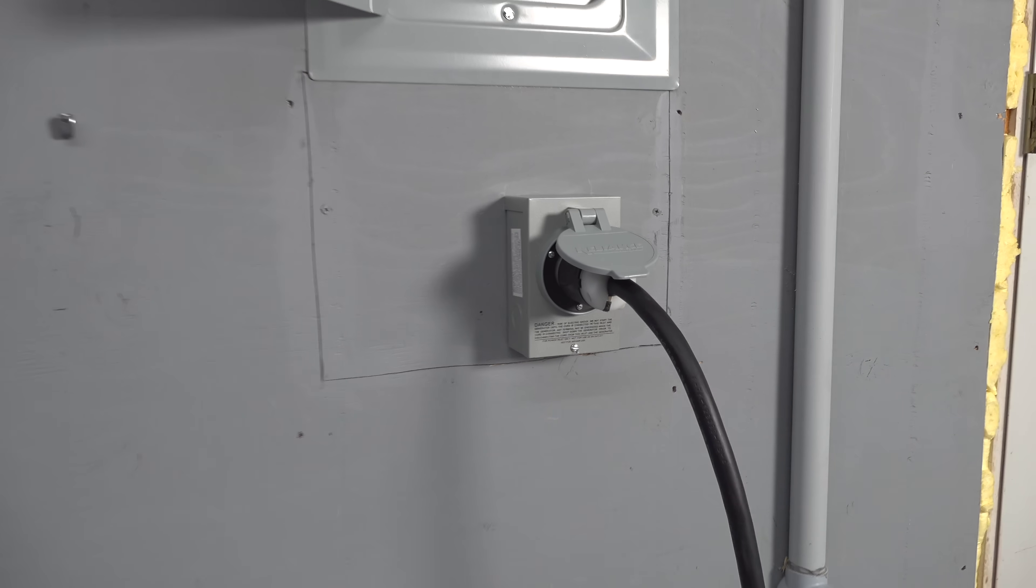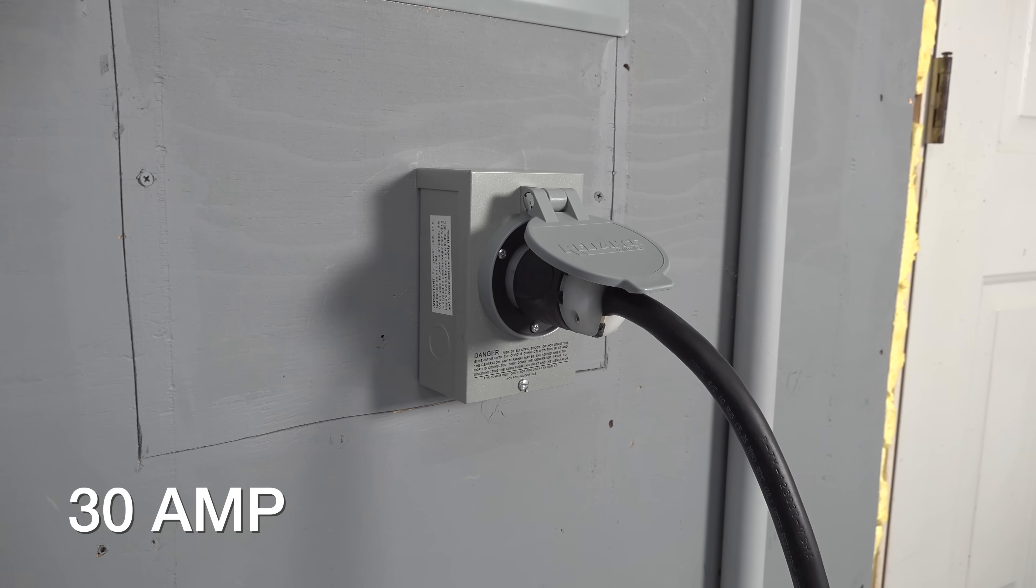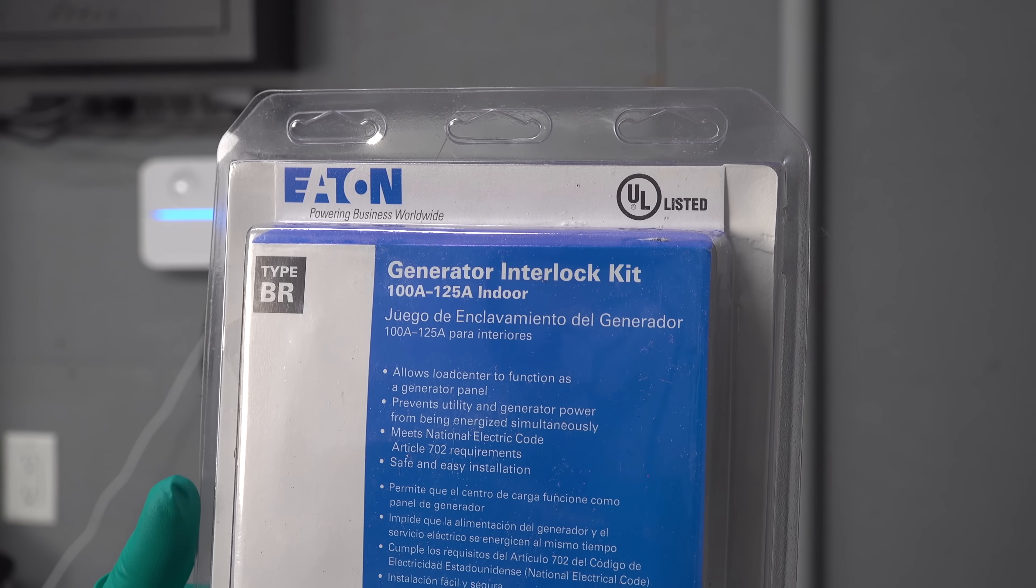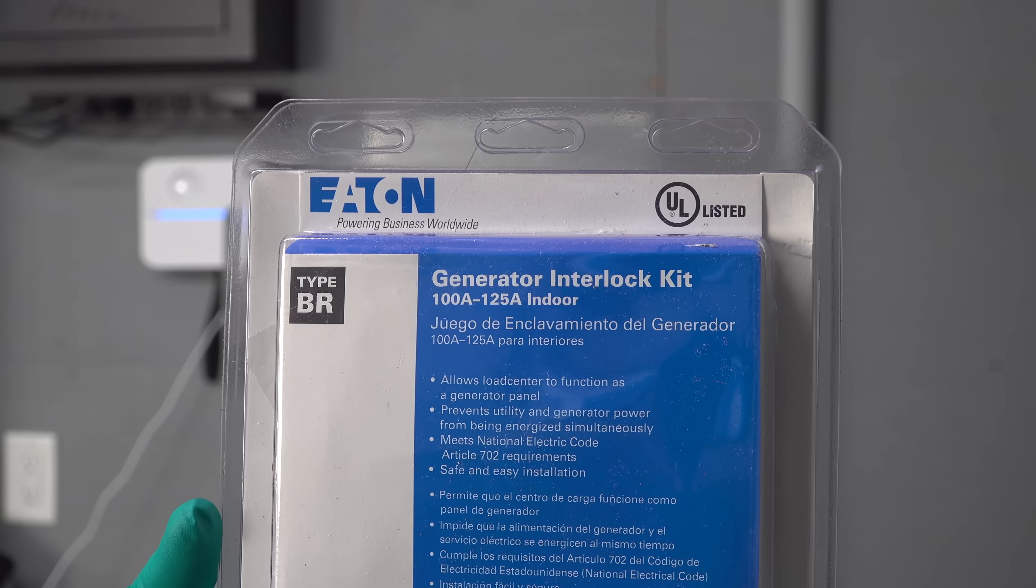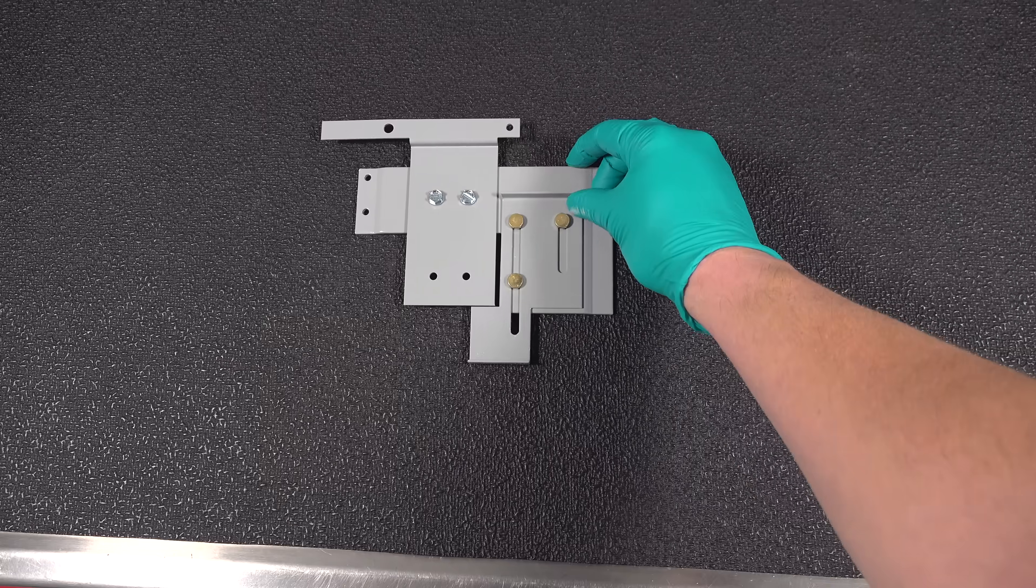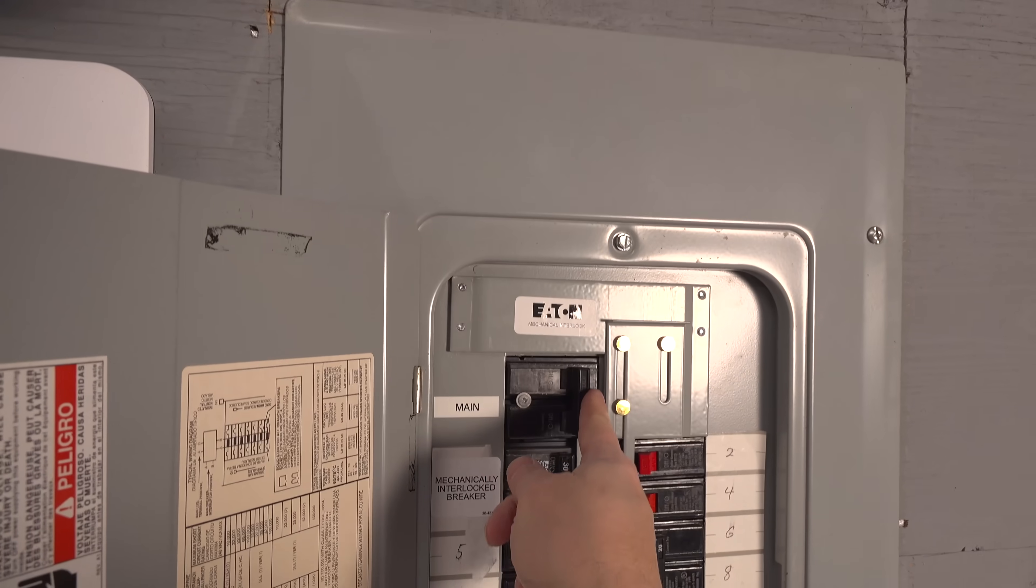Usually if your generator is 7,000 watts or less, you'll use a 30 amp, which is what I'm doing here. Now for the star of the show that makes this system work, it's called the generator interlock kit. While it sounds fancy, it's literally just a piece of metal that prevents you accidentally turning two circuit breakers on at the same time.